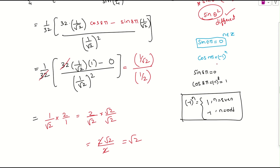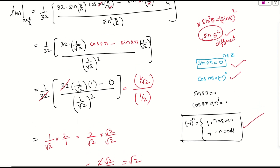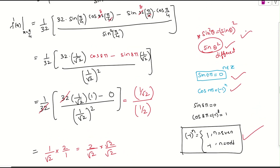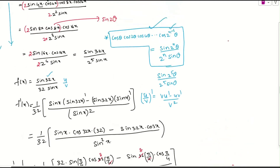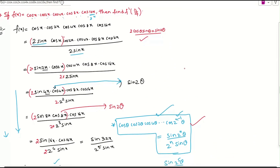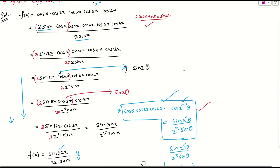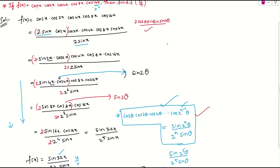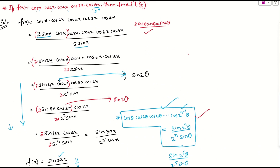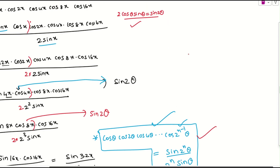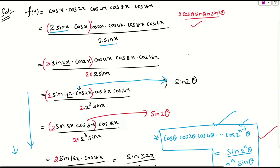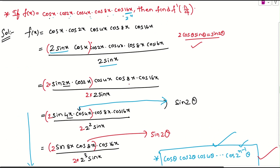So any doubts up to here? Try to note down this formula, and the formulas for sin(n pi) and cos(n pi) as well. From next time you can use the direct formula. I think no doubts. We will continue in the next. Thank you.